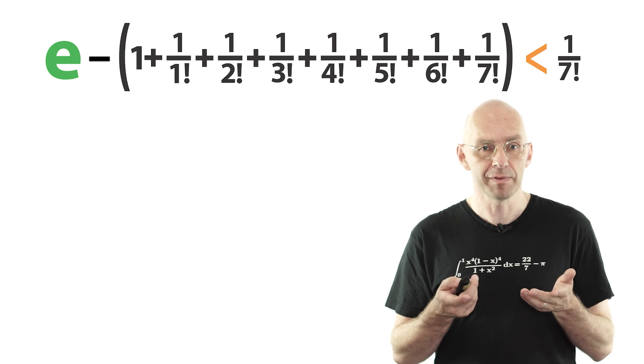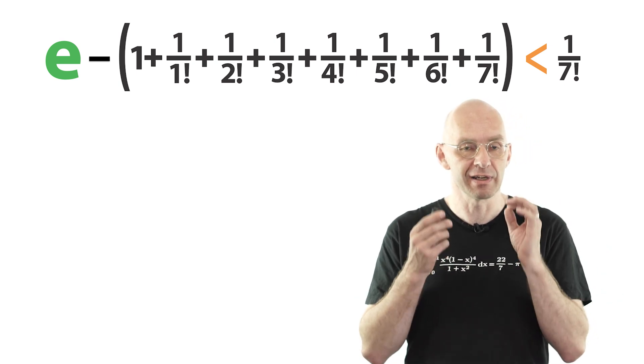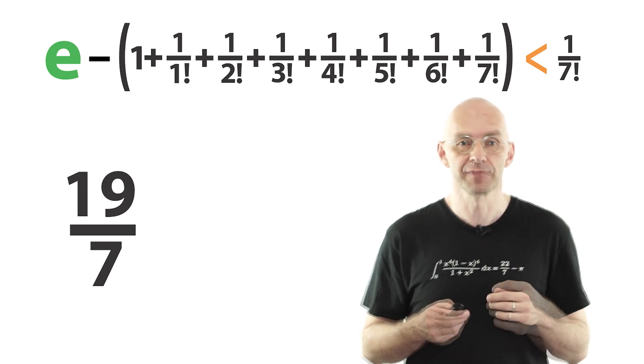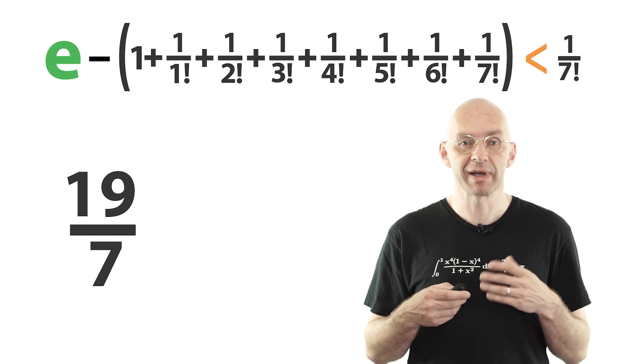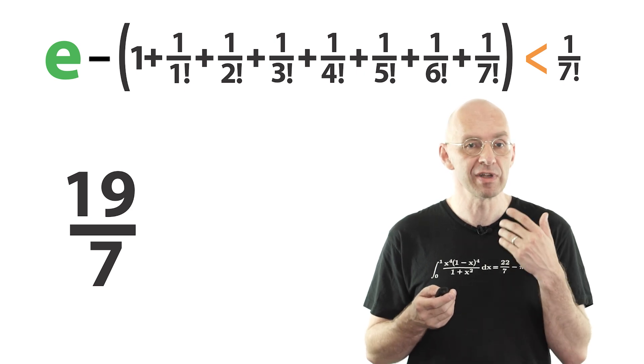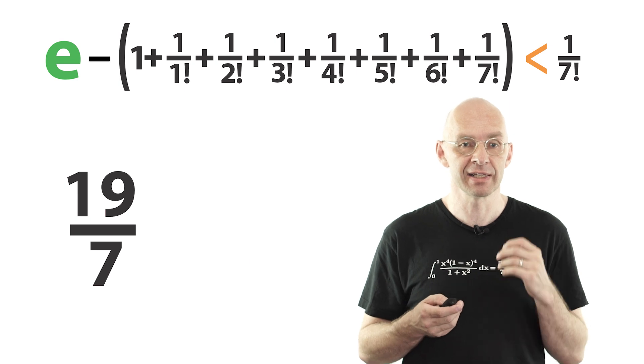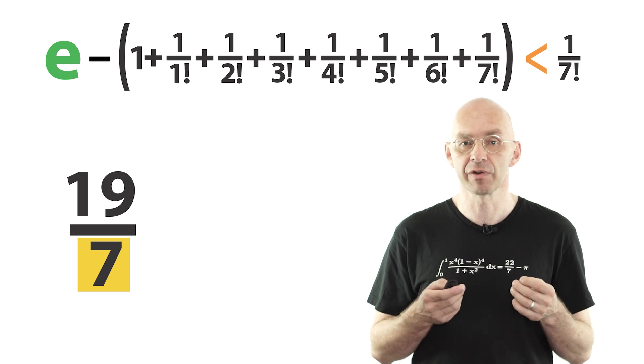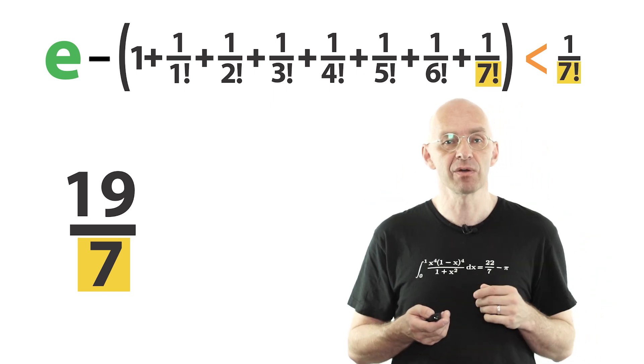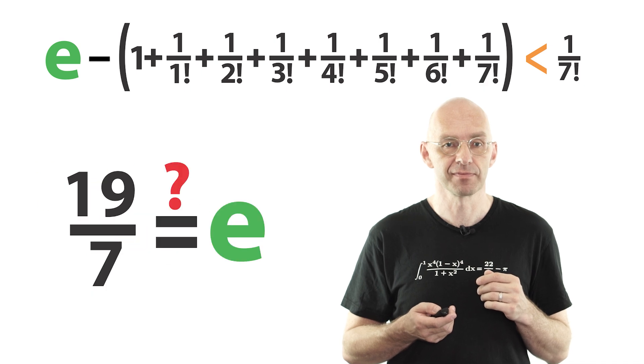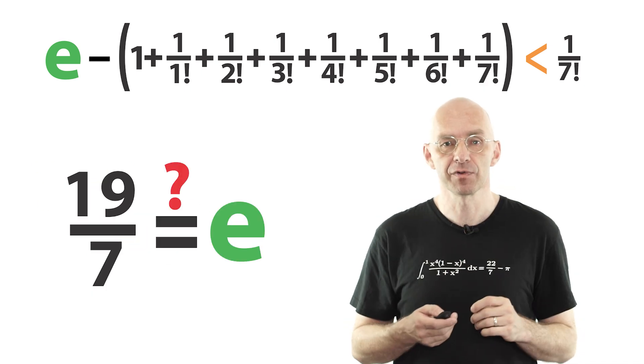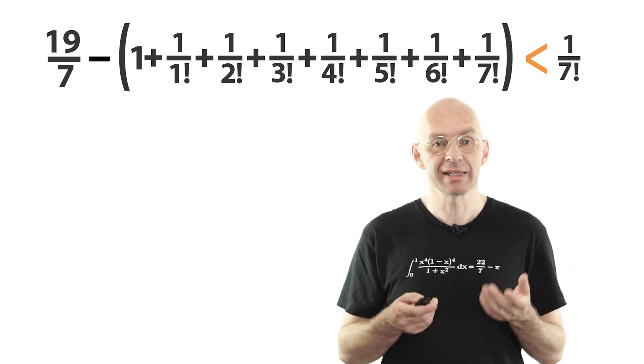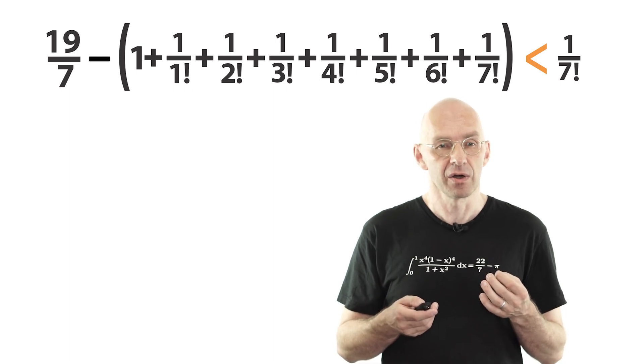Now, let's warm up by using this inequality to show that one particular fraction, 19 over 7, is not equal to e. Why 19 over 7? Well, it does not really matter what fraction we start with. The only reason for us using 19 over 7 is that it has a 7 in the denominator, which will mesh in nicely with the other 7s that are already floating around here. Can e be equal to 19 over 7? Well, let's assume it is. Then we've got this inequality up there. 19 over 7 minus the junk in the brackets is less than 1 over 7 factorial.